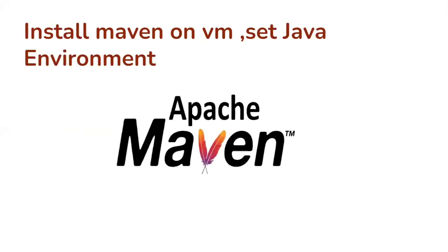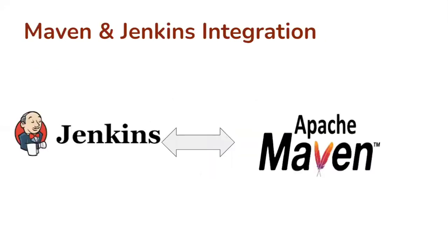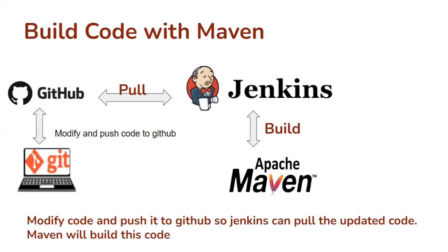Then we will install Apache Maven and set the Java environment, and configure and integrate it with Jenkins. Apache Maven can build the updated code from Jenkins and push it to the Jenkins server as an artifact. Once the developer pushes their updated code on GitHub, Jenkins will automatically pull it from GitHub, Maven will build the code and push the artifact to the Jenkins server. Here we use our Tomcat server for deployment of our WAR or EAR file.